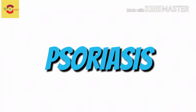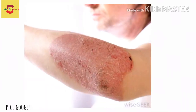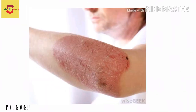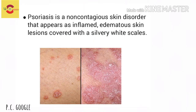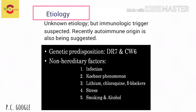Let us see about psoriasis, another skin lesion, today within five minutes. Psoriasis is a non-contagious skin disorder that appears as inflamed, edematous skin lesions covered with silvery white scales. The etiology of psoriasis is usually unknown.